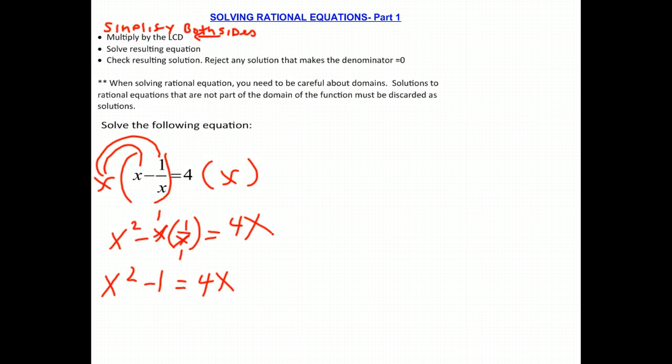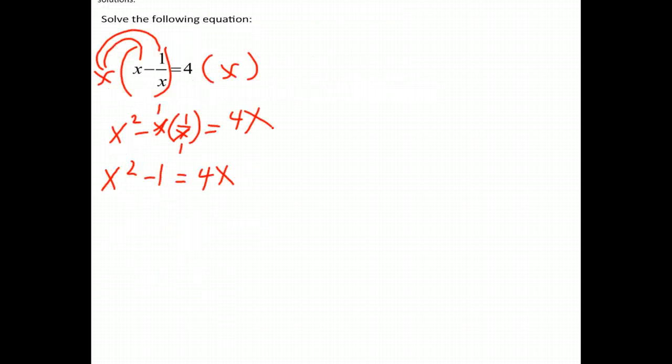So if we continue, you might notice this looks like a quadratic equation since we have a power of 2. So in order to solve a quadratic equation, we want to get all the terms on one side. So we will subtract 4x from both sides. And by doing that, we get 0 on the right side, and on the left side we have x squared minus 4x minus 1.